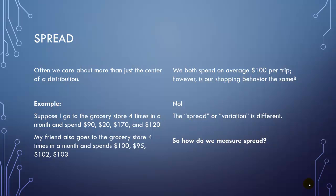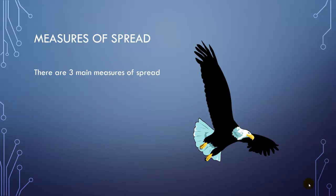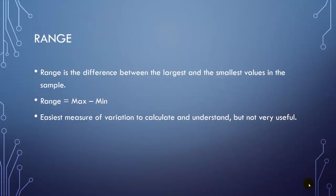So how can we actually measure the spread? There's going to be three ways: range, variance, and standard deviation. Range is the difference between the largest and the smallest values in the sample, or in other words, max minus min. It is the easiest measure of variation to calculate and to understand, but it's not very useful, because all it's doing is taking a difference between the largest and the smallest.